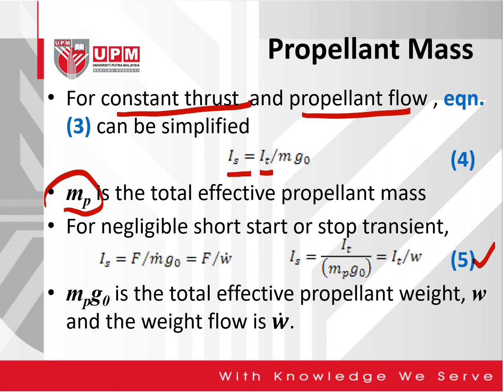M_P times G-naught — the effective propellant mass times the gravitational acceleration — gives the total effective propellant weight W, and the total weight flow rate is W-dot.